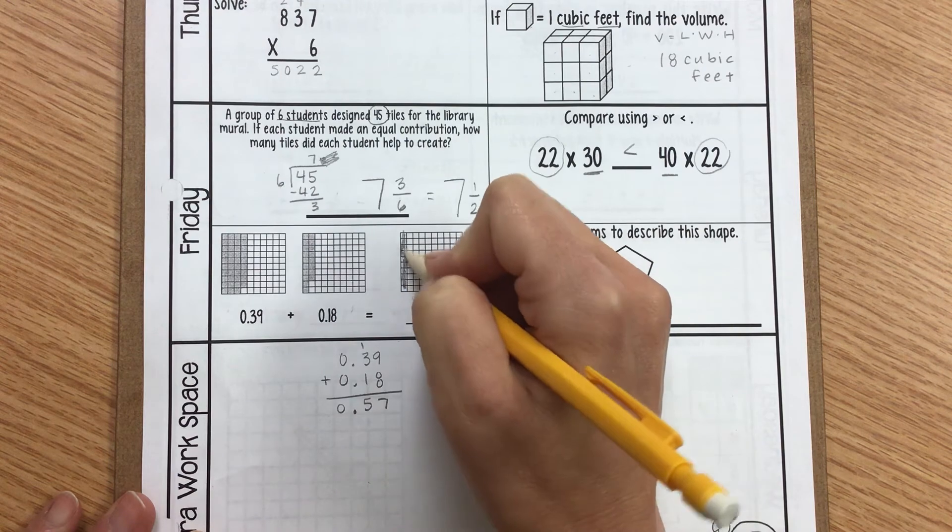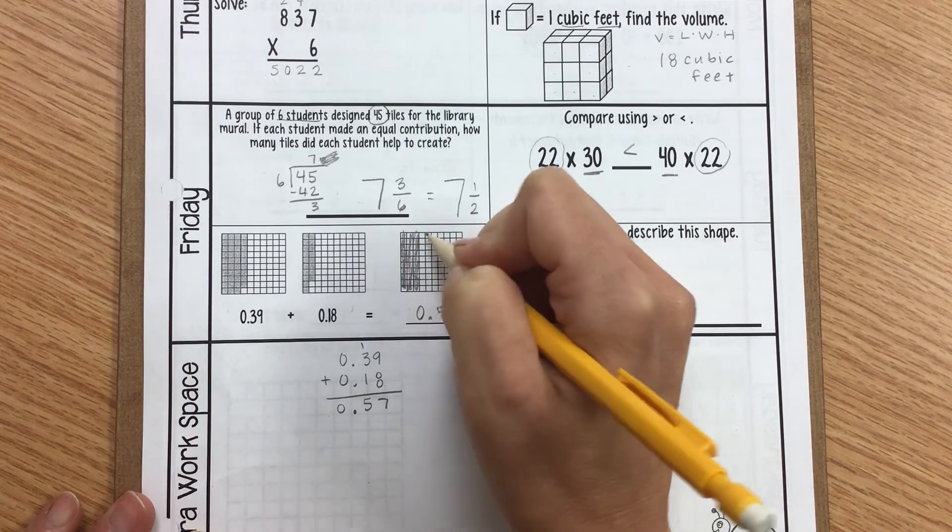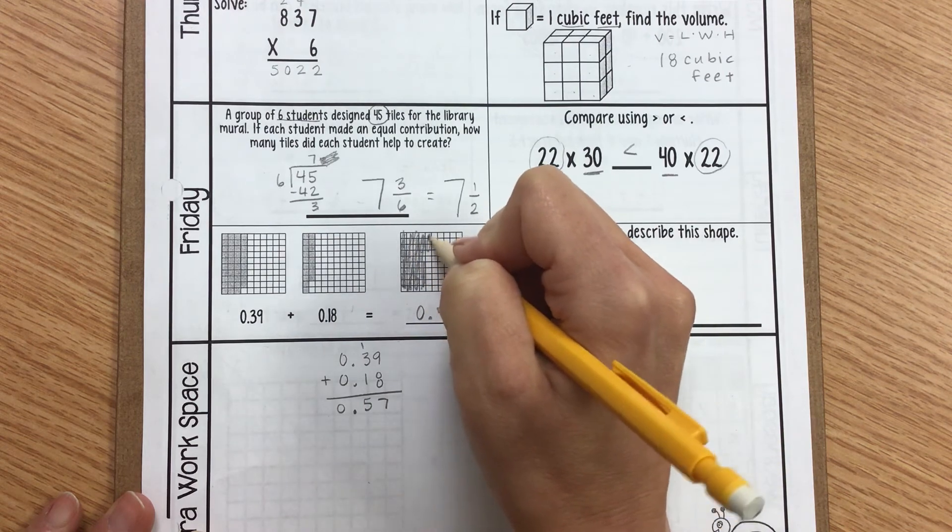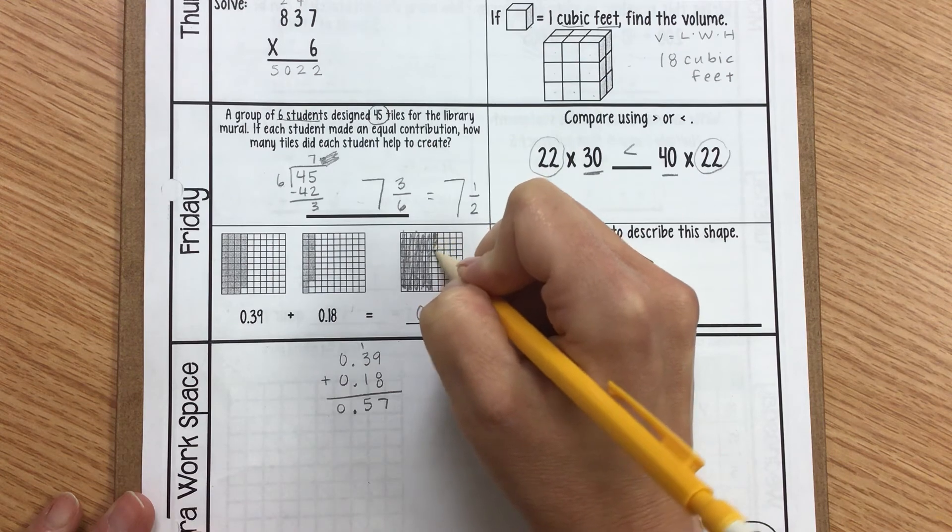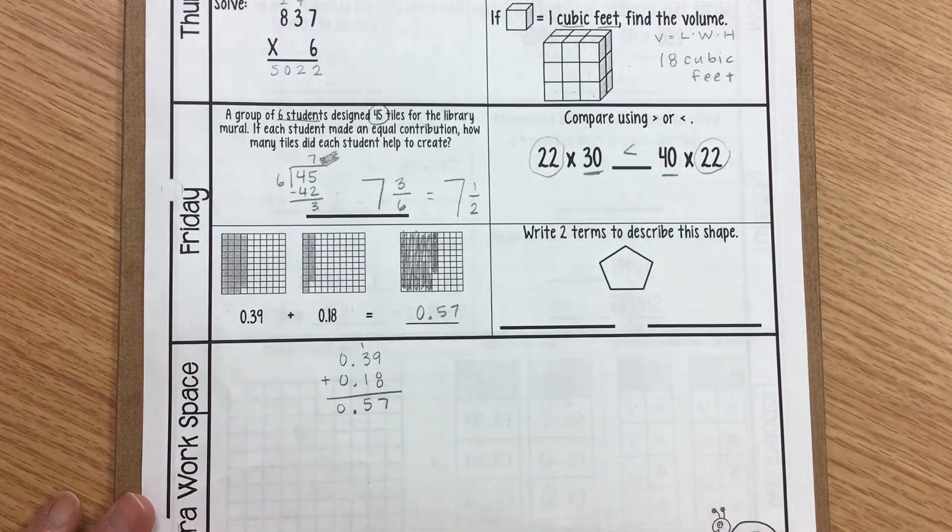And to shade that, I'm going to shade a 10th. Another 10th. Another one. Another one. 1, 2, 3, 4. Another one. And then 7. 57 hundredths.